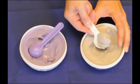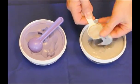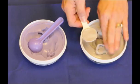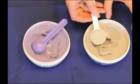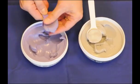I'm using Flexi-Time Putty by Horreus, and you'll notice that I'm getting out a very level scoop. I want to make sure that we use even amounts of base and catalyst, as the materials, handling properties, and set time are all dependent upon having these equal quantities.